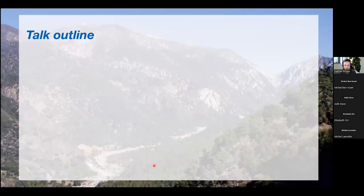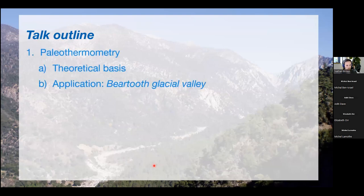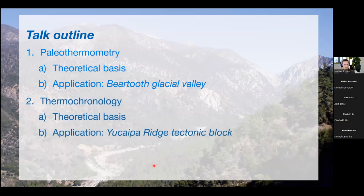So for the remainder of the talk, now that we have a basic understanding for what luminescence is, we're first going to look at using luminescence for paleothermometry, for estimating some average thermal condition. So I'll give some theoretical background, and then we'll look at an application in a glacial valley. And then we'll look at a dynamic thermal situation where you have rapidly, tectonically zooming bedrock next to the San Andreas Fault in Southern California. And then some concluding thoughts.